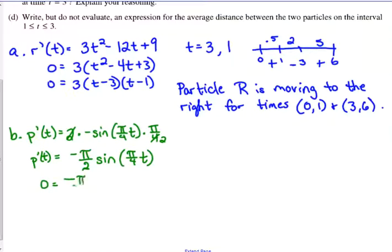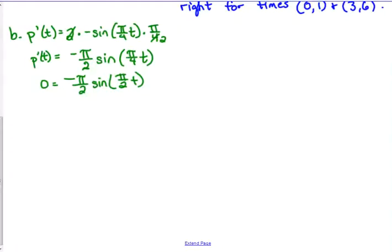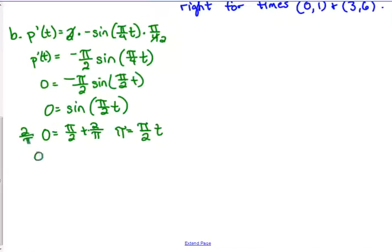When we find its critical numbers, set it equal to 0. When we divide by that constant in front, 0 divided by anything is 0, so that's just going to go away. So the question is, where is sine equal to 0? Well, sine is equal to 0 at 0 and at pi. Remember, when we did that other problem, that's not T. That's the angle inside the trig function.